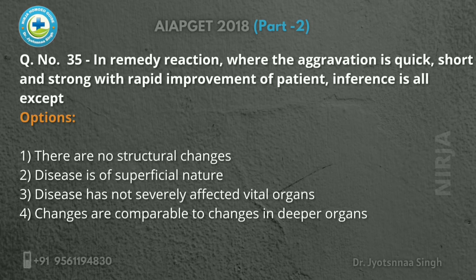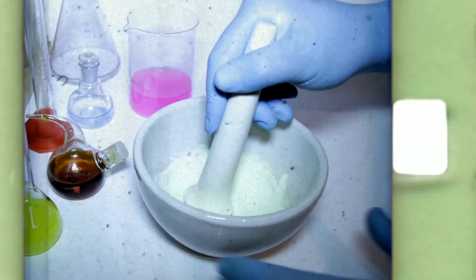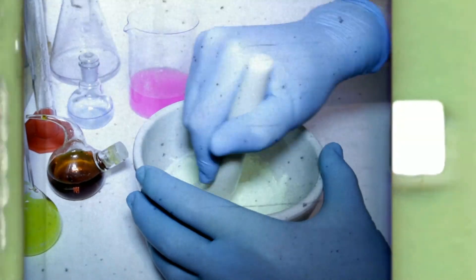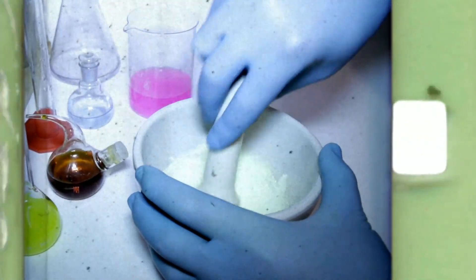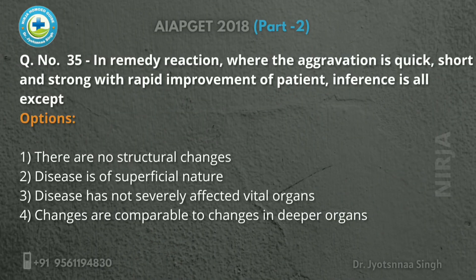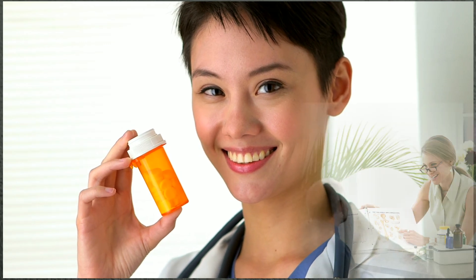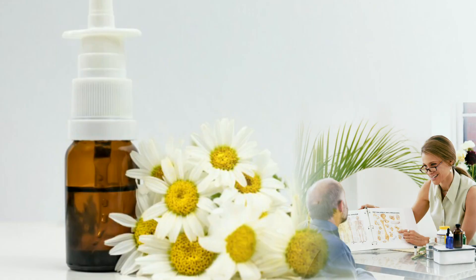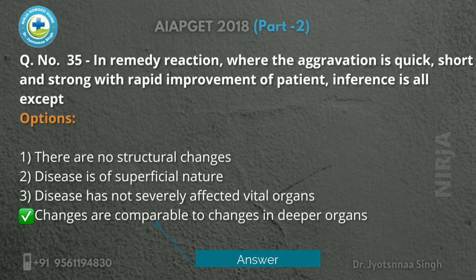In remedy reaction, where the aggravation is quick, short, and strong with rapid improvement of the patient, the inference is all except which one? The quick, short, and strong aggravation with rapid improvement is given in the third observation of Hahnemann's 12 observations. It indicates no structural changes, diseases of a superficial nature, and disease has not severely affected vital organs. This type of aggravation is most desirable and is termed homeopathic aggravation. The exception is the fourth option: changes comparable to changes in deeper organs.